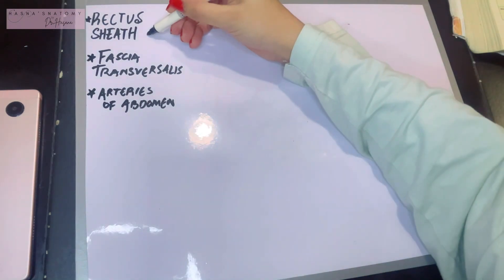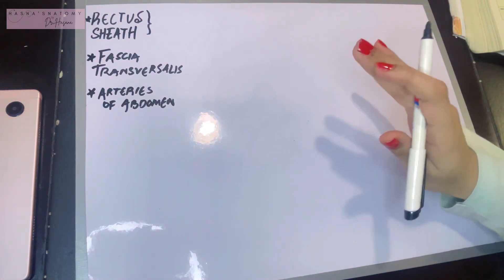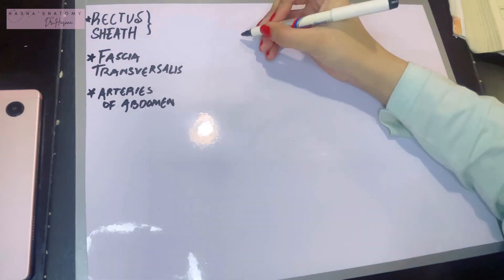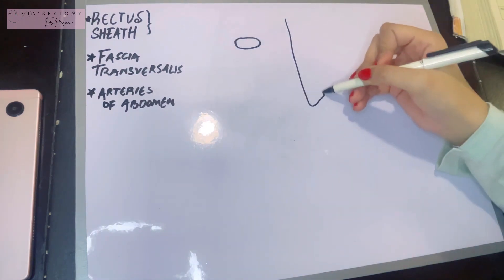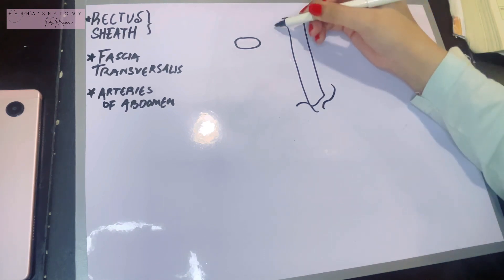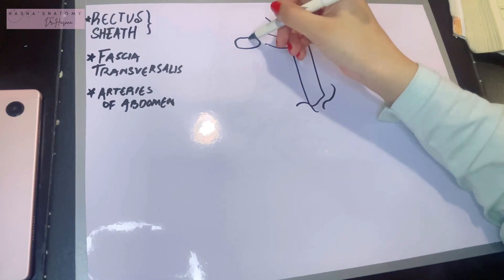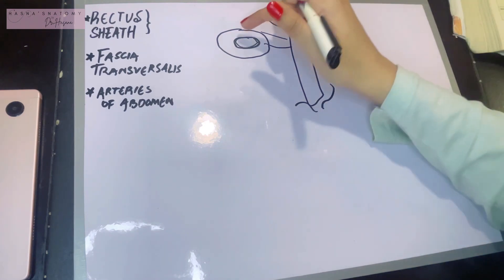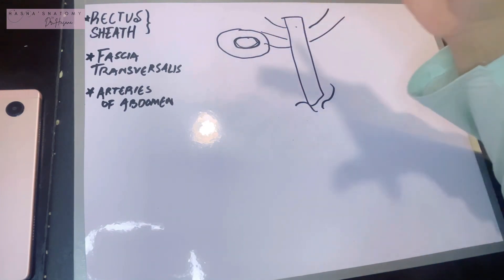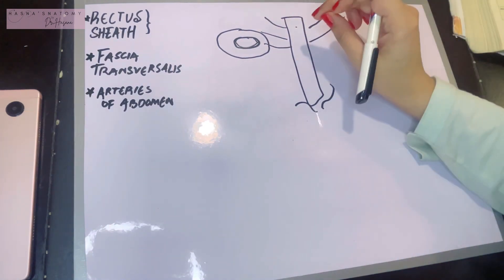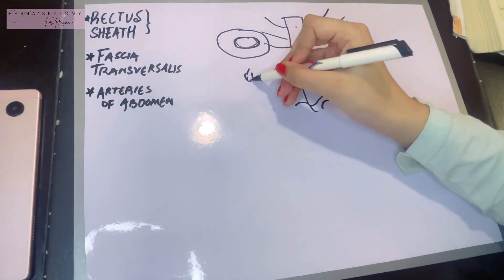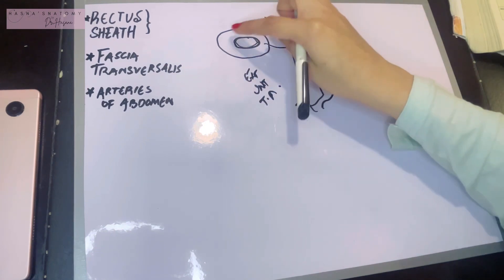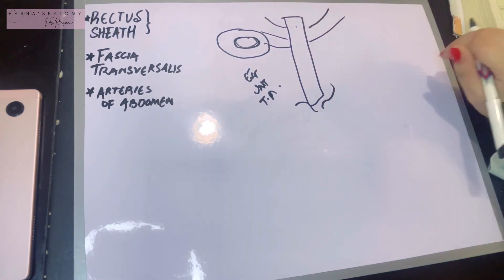Let's get started with the first topic: the rectus sheath. We have already studied this in our abdominal muscle videos — if you haven't watched that yet, go ahead and click the link in the description. The rectus abdominis is a vertical muscle running from below your pubic crest all the way up to your costal cartilage, and it is surrounded by an aponeurotic sheath formed by the interweaving of the aponeuroses of the external oblique, internal oblique, and transversus abdominis muscles.